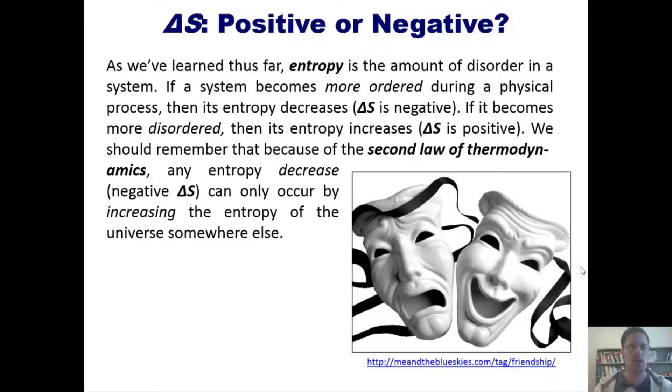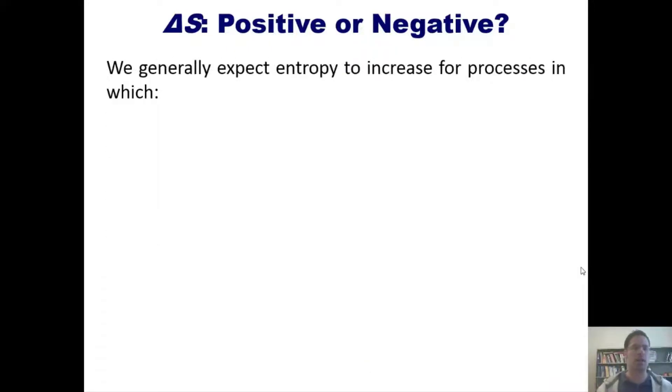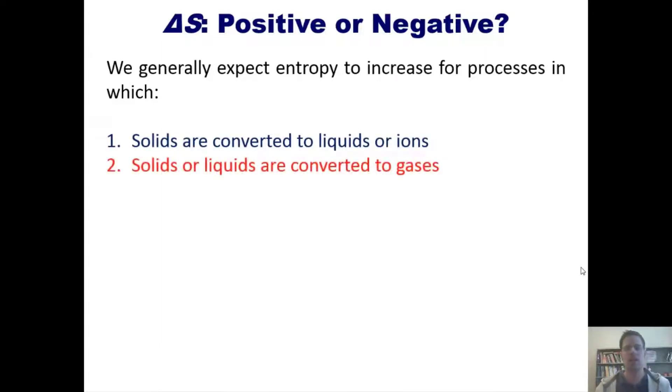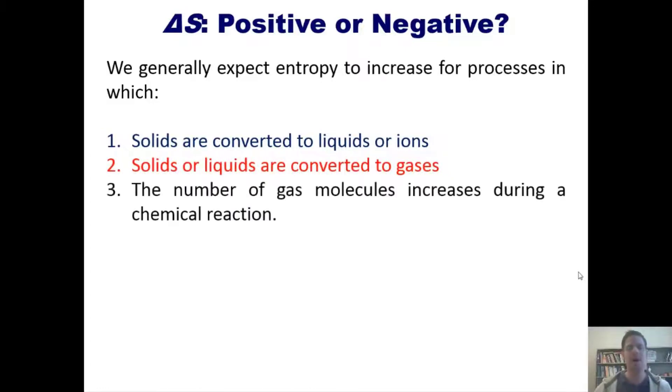Now we generally expect entropy to increase for processes in which solids are converted to liquids or ions, solids or liquids are converted to gases, or the number of gas molecules increases during a chemical reaction. Now if you think about it, every single one of these scenarios is one in which molecules go from being more constrained or restricted to being less constrained and less restricted. In other words, they go from being more ordered or organized to being less ordered and more disorganized. Hence every one of these is a scenario in which entropy is increasing because disorder is increasing.